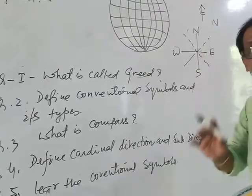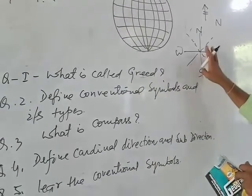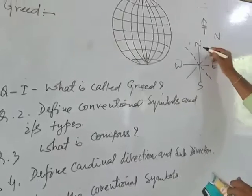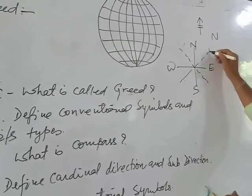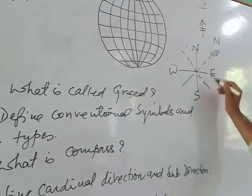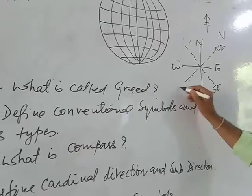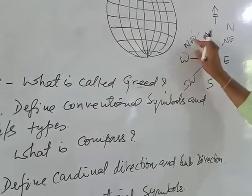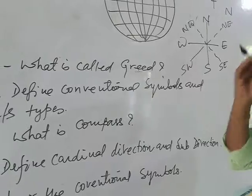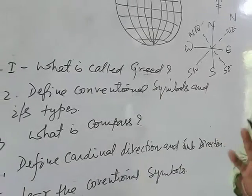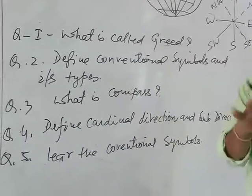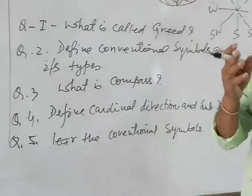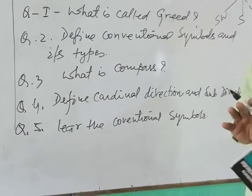And, in between cardinal directions, some sub-directions are also there. Like this. Suppose, this is north and this is east. In between north-east, south-east, south-west, north-west. This is called sub-directions. I mean, total how many directions? Eight directions. Among them, four are the cardinal and four are sub-cardinal or sub-directions.